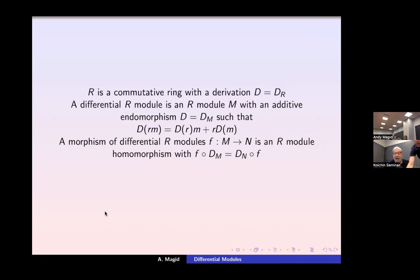Now we're ready to go. Definition: R is a commutative ring with a derivation d. A differential R-module is an R-module with an additive endomorphism d — sometimes subscripted to indicate relevance to that module — satisfying the identity that d(r·m) = d(r)·m + r·d(m). A morphism of differential R-modules is an R-module homomorphism which commutes with the derivations.